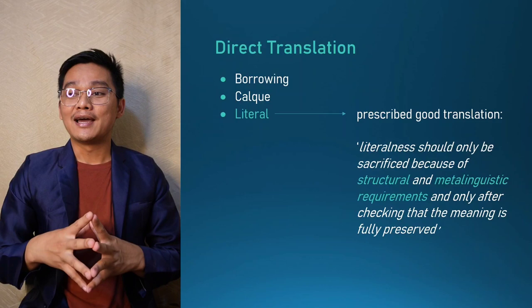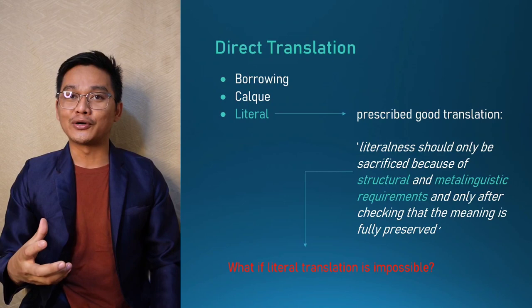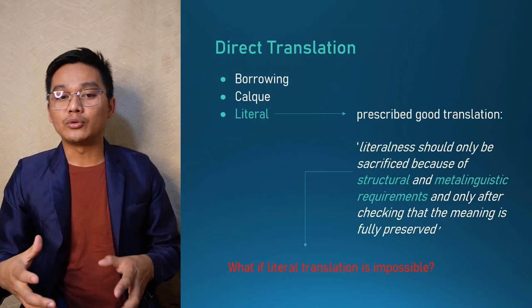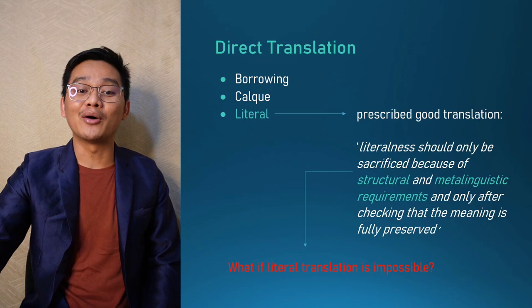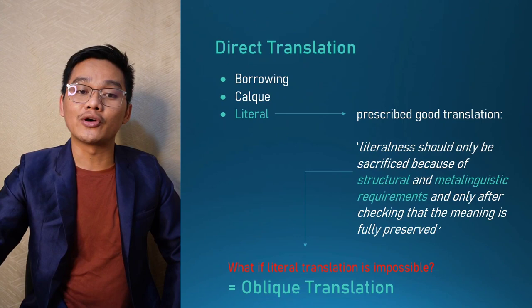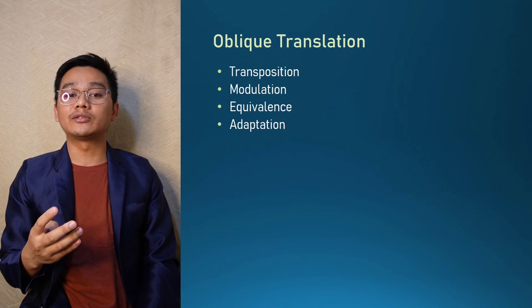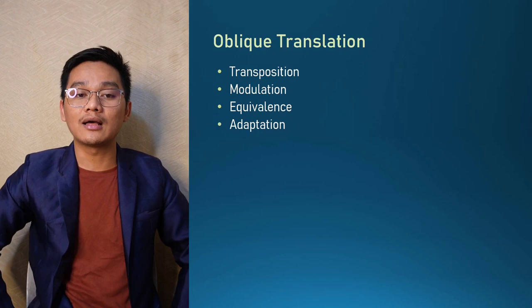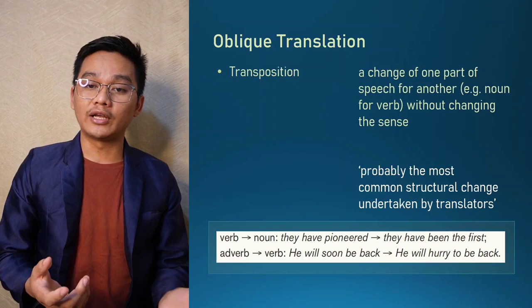However, it is not always possible to employ literal translation, because many languages do not share the same culture, linguistic structure, or cultural values. When a literal translation is impossible, that is when we need to resort to the other strategy: oblique translation. According to Vinay and Darbelnet, oblique translation is required when literal translation is impossible, and it comprises four different procedures: transposition, modulation, equivalence, and adaptation.